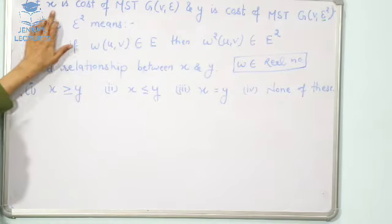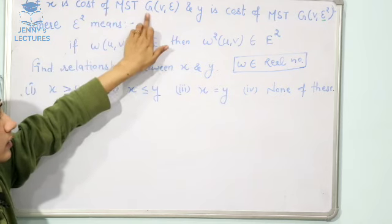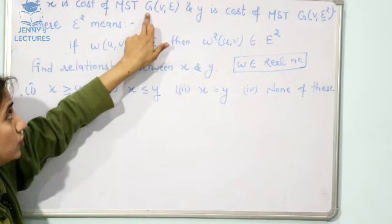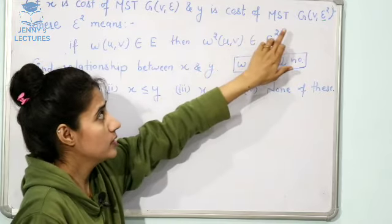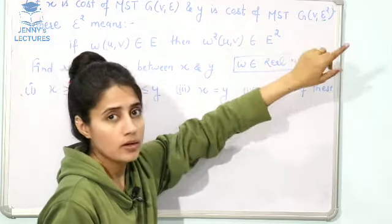it is given that X is the cost of MST G(V,E) and Y is the cost of MST G(V,E²).